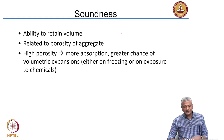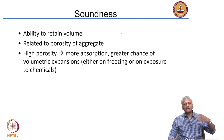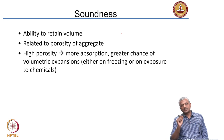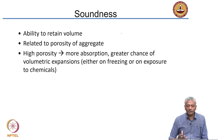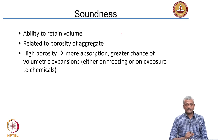Soundness is tested using a magnesium sulphate solution as per IS 2386. You dip your aggregate into it, dry it, and repeat for several cycles. As a result, crystals of magnesium sulphate form inside the porosity, causing damage. Higher porosity means a greater chance of volumetric expansion. You need to restrict aggregate which has poor soundness.